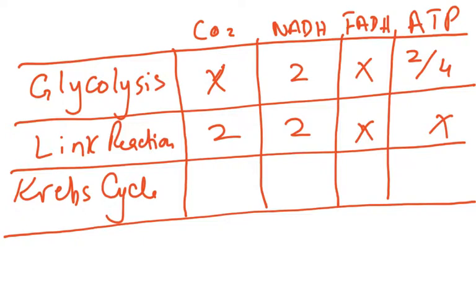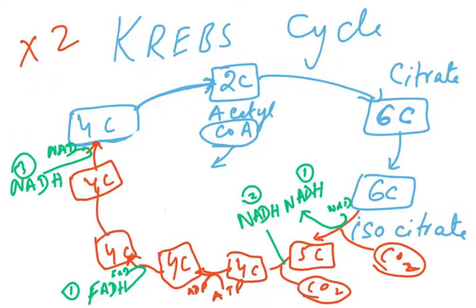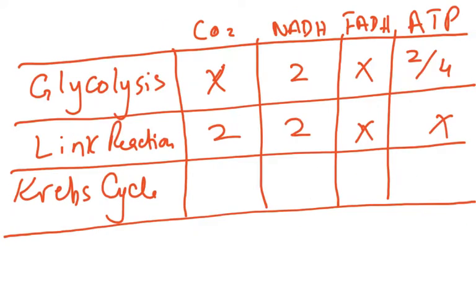In the Krebs cycle: in one cycle we had two CO₂, so for both cycles we have four CO₂ — but carbon dioxide just diffuses out of the mitochondria and cell so it is of no use to us. NADH was three per cycle, so two times three gives six NADH. FADH was one per cycle, giving two FADH. ATP was one per cycle, giving two ATP.